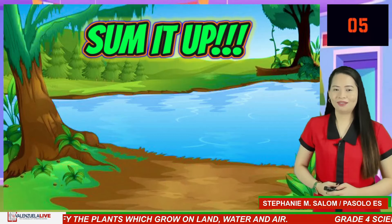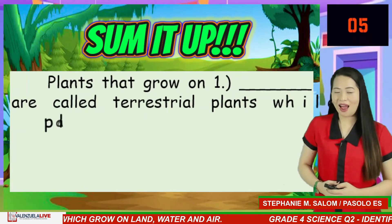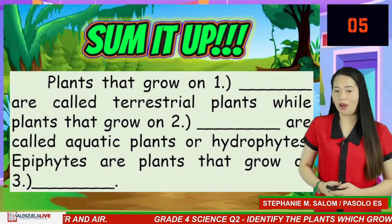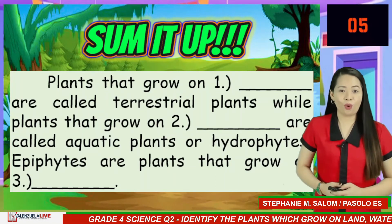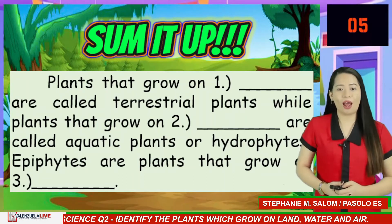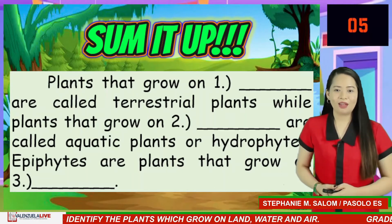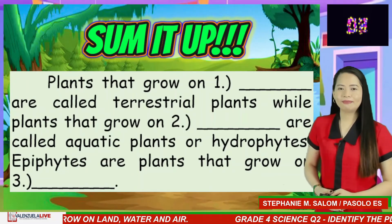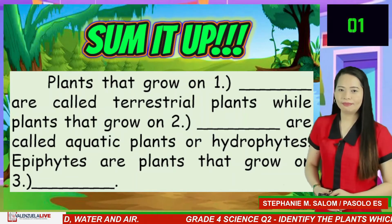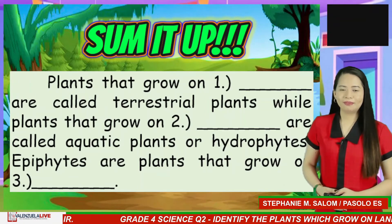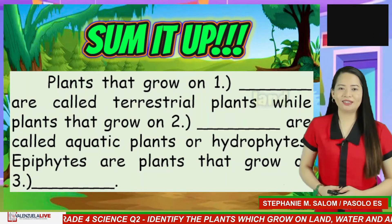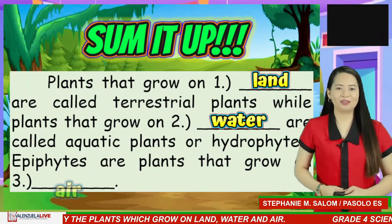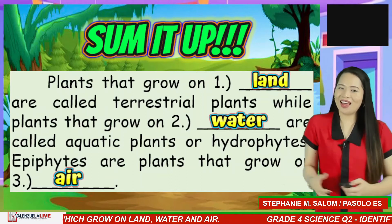Let's sum it up! Plants that grow on blank are called terrestrial plants. Plants that grow on blank are called aquatic plants or hydrophytes. Epiphytes are plants that grow on blank. Number 1 is land, number 2 is water, and number 3 is air. If you got all correct answers — excellent!